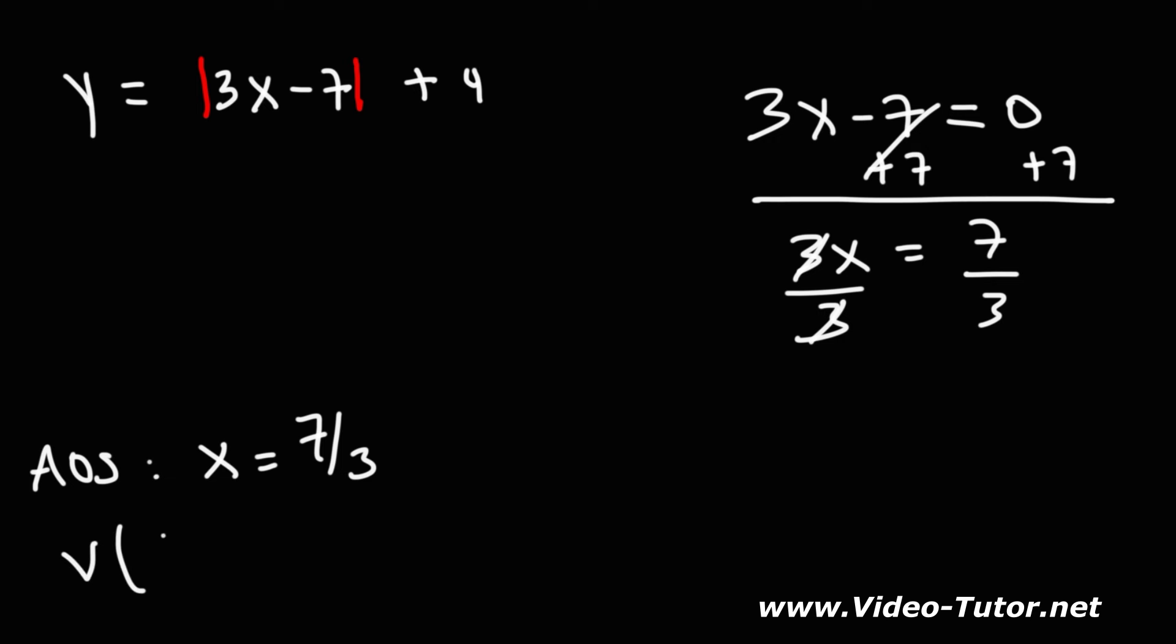For the vertex, the x coordinate will be the same, 7 over 3. And if you plug in 7 over 3 into x, this is going to be 0 because we set it equal to 0 and got that point. And then 0 plus 4, this will just give us a y coordinate of 4. So that's all you need to do whenever you want to find the vertex and the axis of symmetry.